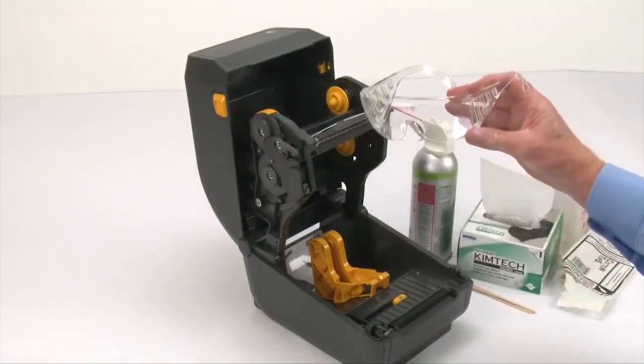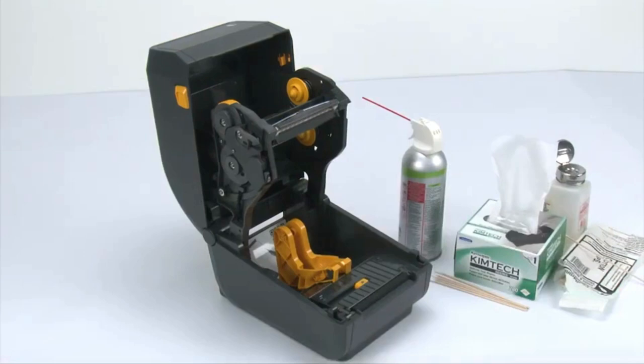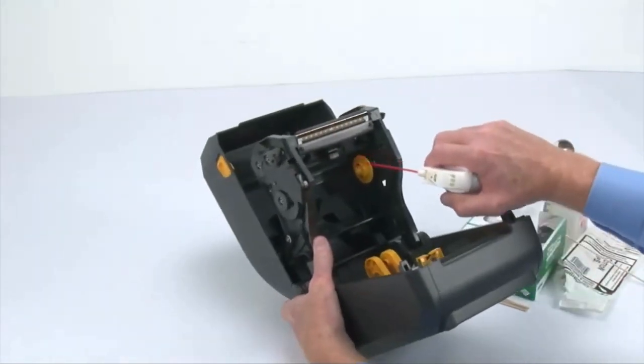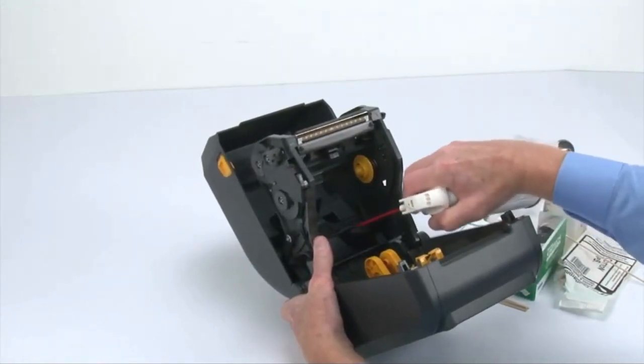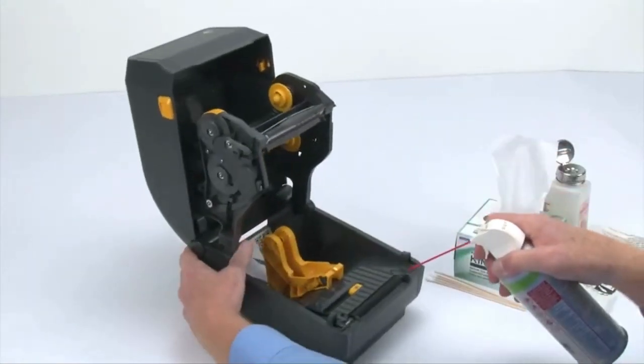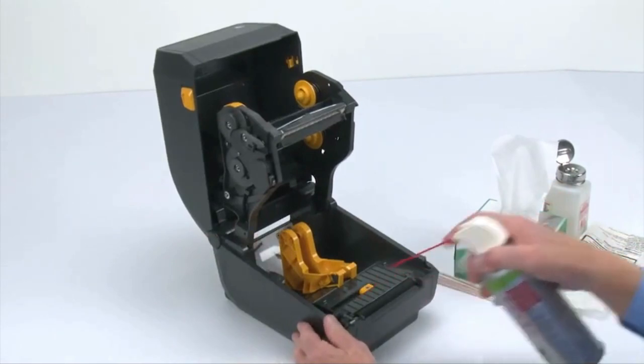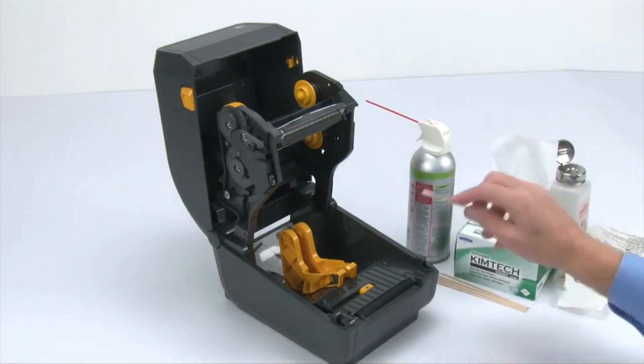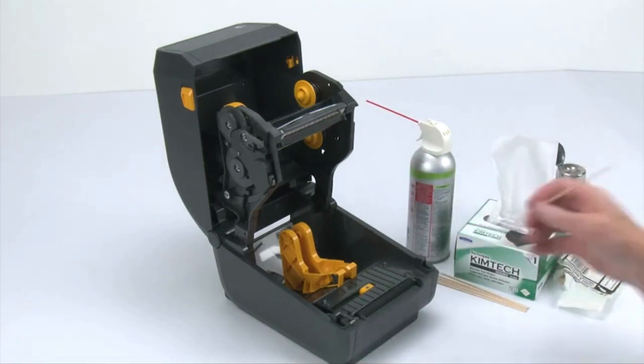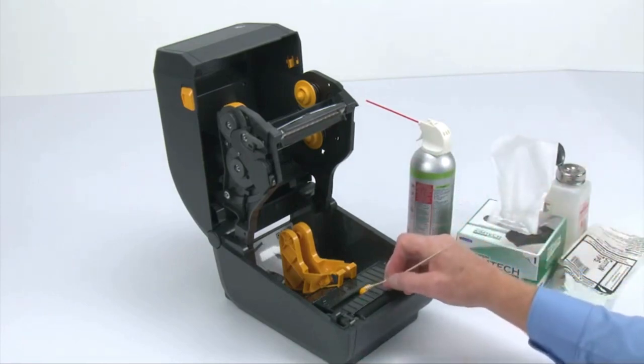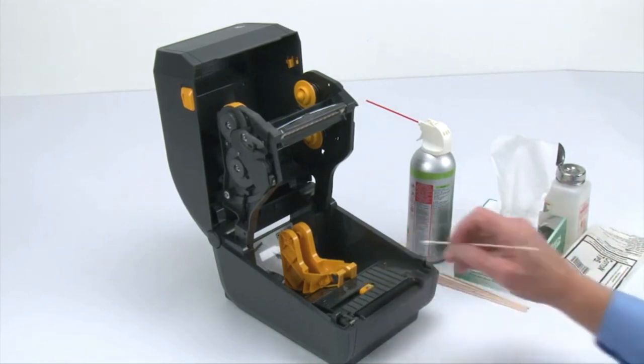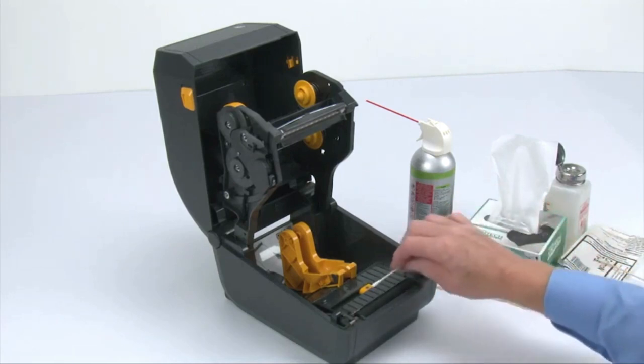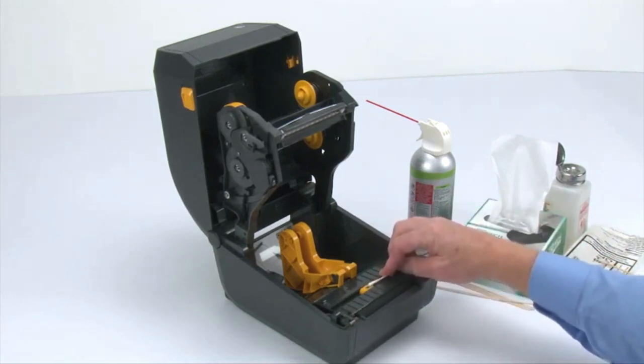Wear eye protection when using compressed air. Clean the media sensors using a can of compressed air. If adhesives or other contaminants remain, use an alcohol moistened swab to break it up. Use a dry swab to remove any residue that may be left from the first cleaning.